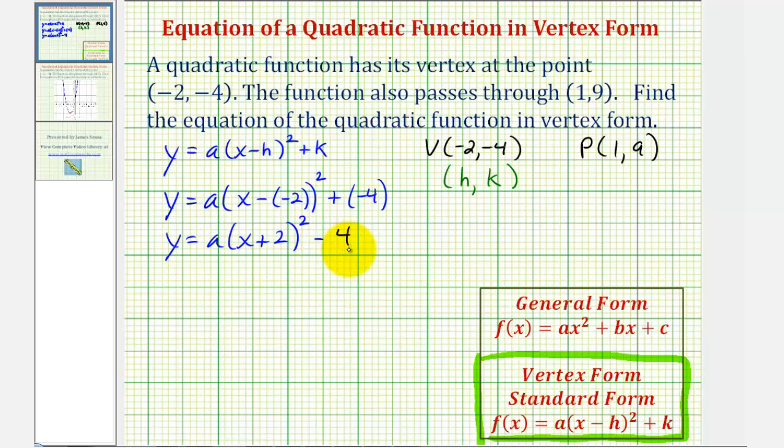Notice in this equation we have three unknowns: x, y, and a. But we also know the function passes through the point one comma nine, which means x equals one and y equals nine must satisfy this equation. So now we'll substitute one for x, nine for y, which will allow us to find the value of a, which will give us the equation of our function.